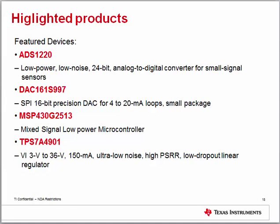Key device selection criteria: the ADC requires current excitation and buffered reference inputs for ratiometric measurement. It must be low power to meet loop power requirements, have low noise, high input impedance, a programmable gain amplifier, small package, simultaneous 50Hz and 60Hz rejection, and resolution targeting 10 times better than overall system accuracy. Meeting all these requirements, the ADS1220 — a 24-bit sigma-delta ADC — was chosen.